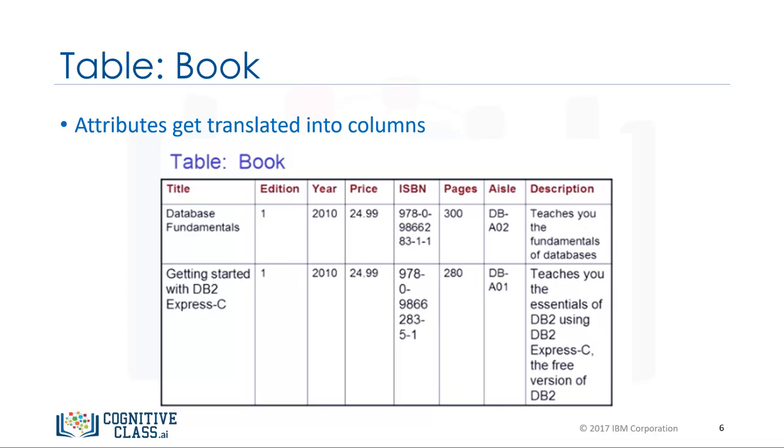While mapping, the entity becomes the table. Having said that, the table has not yet taken the form of rows and columns. The attributes get translated into columns in a table, providing the actual table form of rows and columns.